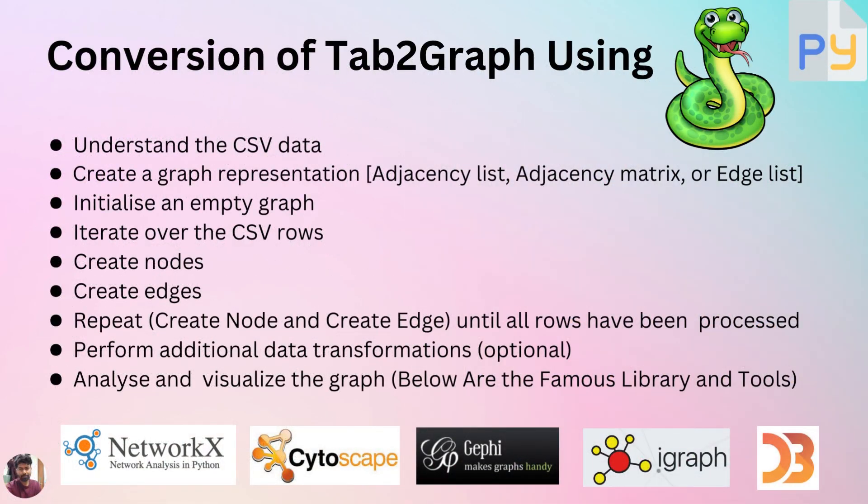Let's discuss the conversion of tabular data to graph using Python. First, we need to understand the CSV data and its structure completely. Once we have a clear understanding of the data, we can initialize an empty graph. The choice of graph representation — such as adjacency list, adjacency matrix, or edge list — depends entirely on the specific use case and operations we want to perform on the graph.